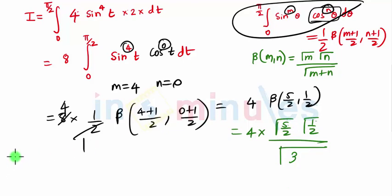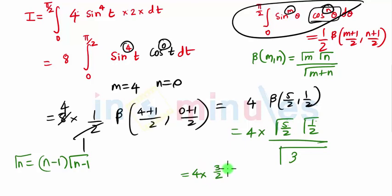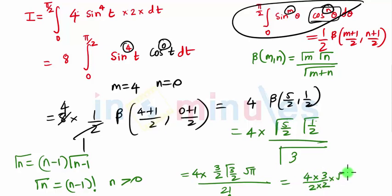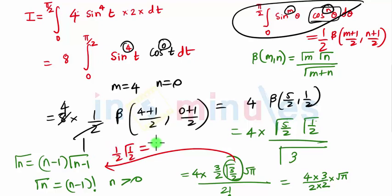For the numerator we use the formula Γ(n) = (n−1)·Γ(n−1). So Γ(5/2) = 3/2·Γ(3/2), and Γ(1/2) = √π. For the denominator, Γ(n) = (n−1)! provided n is a positive integer, so Γ(3) = 2! = 2. We get 4 times (3/2)·Γ(3/2)·√π upon 2. For Γ(3/2) we apply the formula again: Γ(3/2) = 1/2·Γ(1/2) = 1/2·√π.